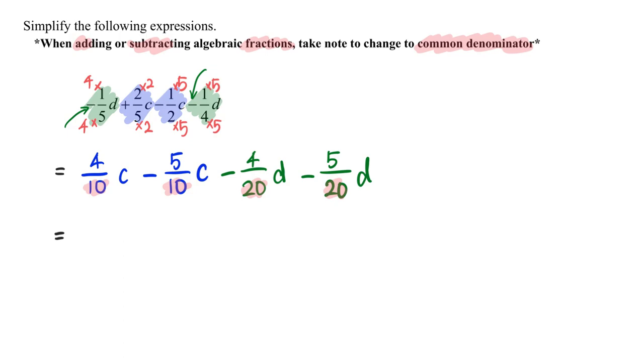4 over 10 minus 5 over 10, negative 1 over 10 C. Negative 4 over 20 D minus 5 over 20 D, negative 9 over 20 D.